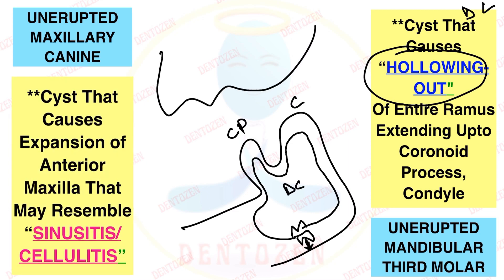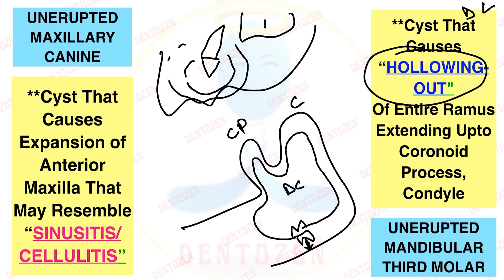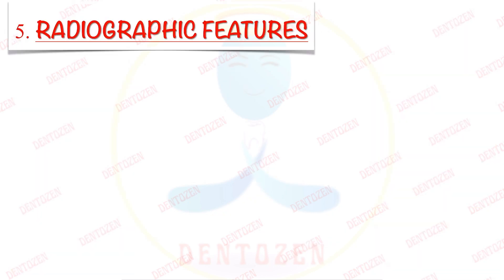In the maxillary anterior region, if associated with an unerupted canine, the cyst can expand so close to the maxillary sinus that we may mistake it for sinusitis or cellulitis — another important clinical point.